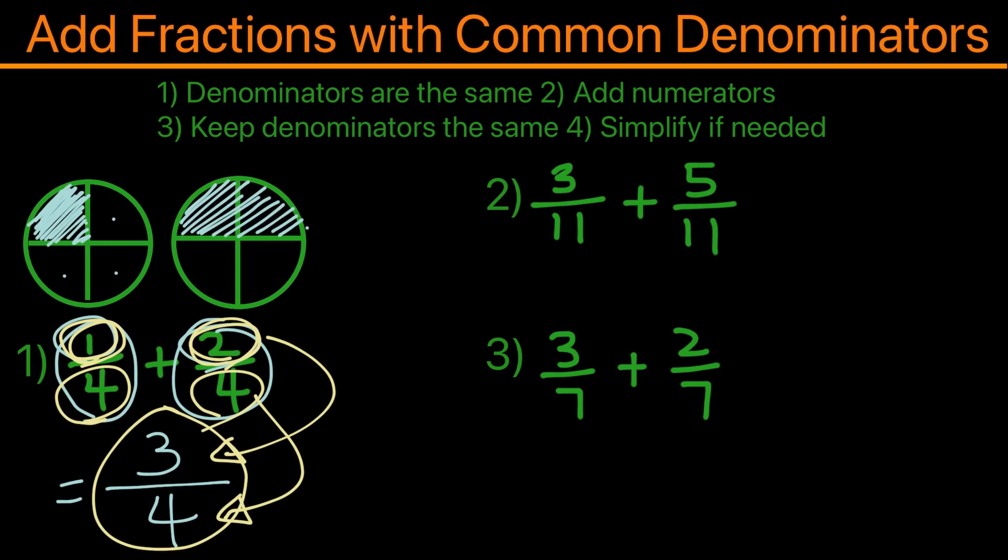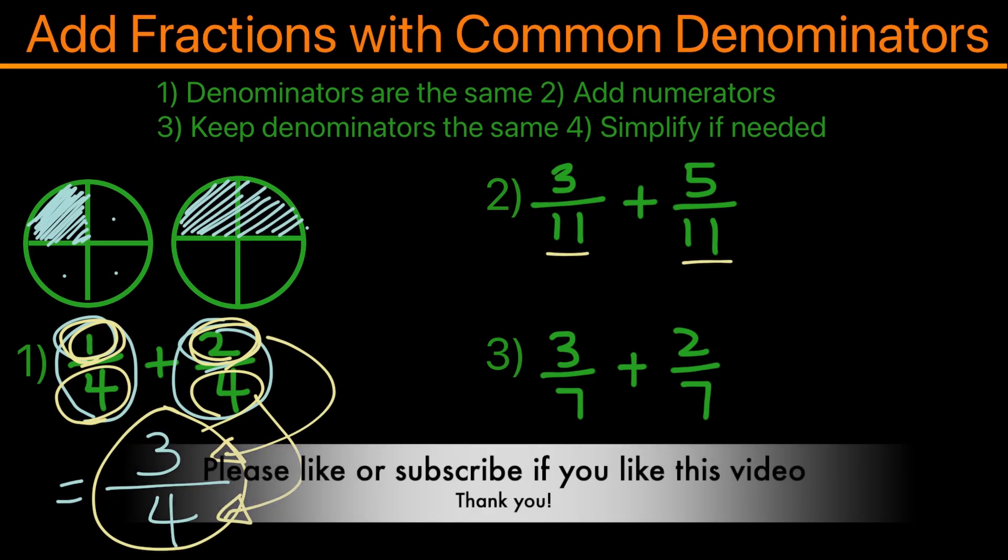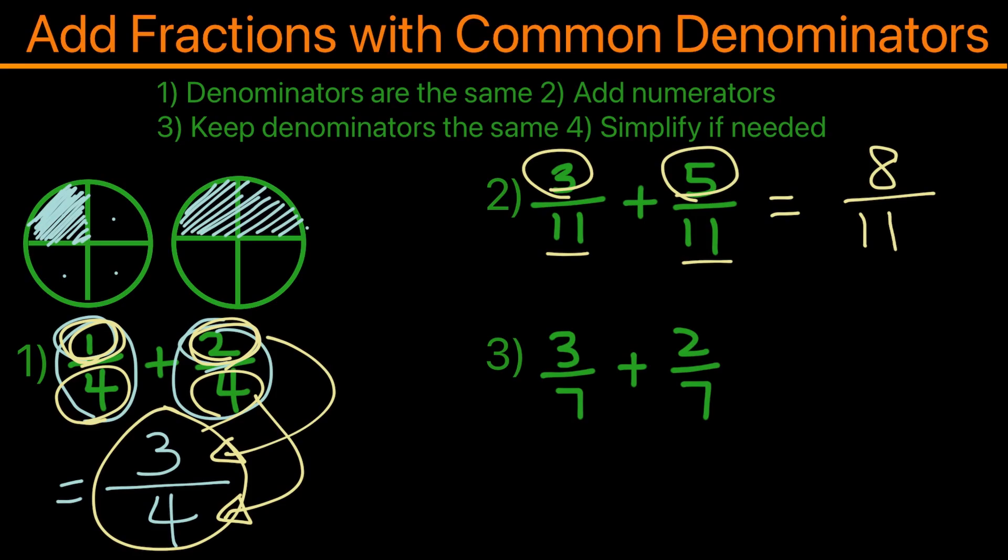We have the denominators being 11. We can see that the denominators are the same, so we're moving to the second step, which is to add the numerators: 3 plus 5. So 3 plus 5 equals 8. Then we go to the third step, which is to keep the denominator the same, so that will be 11. And the last step: see if we can simplify. We can see that this fraction can no longer be simplified, so the final answer is 8 over 11.